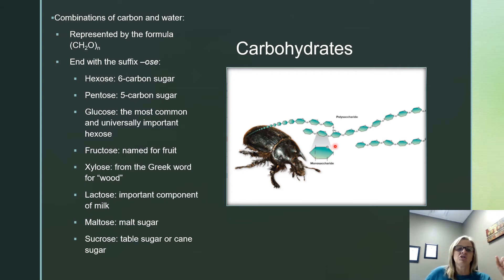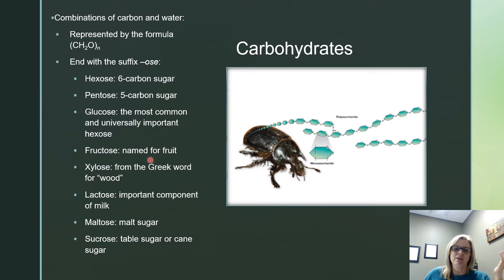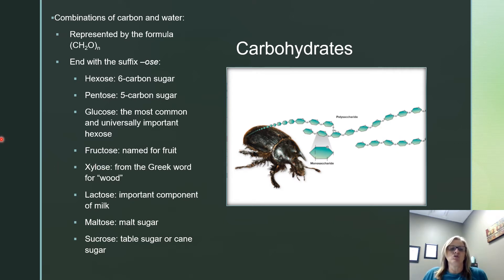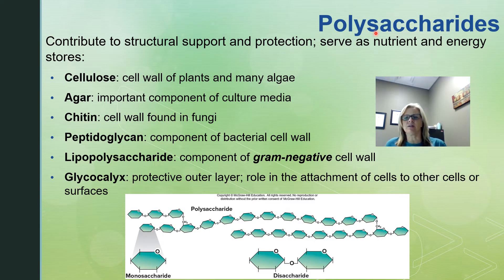We have xylose, which comes from the Greek word for wood. Lactose is milk sugar, maltose is malt sugar, and sucrose is what we call our normal table sugar. Some carbohydrates also contain some sulfur and some nitrogen on them as well.